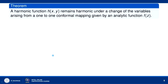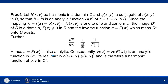Let H(x,y) be a harmonic function in a domain D and G(x,y) be a conjugate of H(x,y) in D, so that H + iG is an analytic function, denoted H(z). Since the mapping w = f(z) is one-to-one and conformal, the image D* of D is a domain, f'(z) ≠ 0 in D, and the inverse function z = φ(w) maps D* onto D.